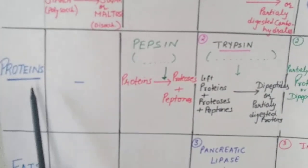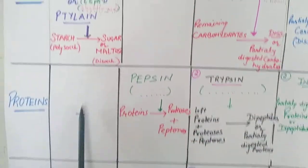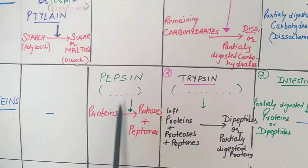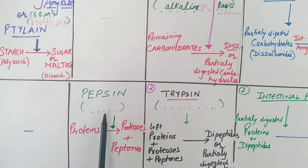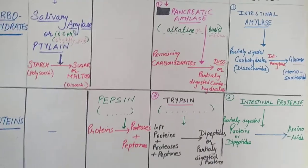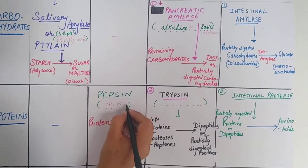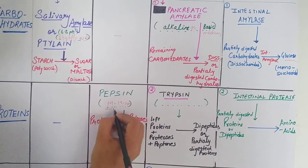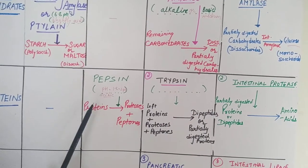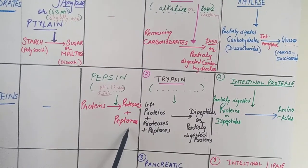Now, for the protein component of food, we will see its digestion with a flowchart. In the mouth, saliva has no enzyme for the digestion of protein. When food moves into the stomach, gastric juices secrete an enzyme called pepsin, which works in slightly acidic medium — pH is about 1.8 to 2. This acidic medium is maintained due to the secretion of HCl. Pepsin converts proteins into proteases and peptones.